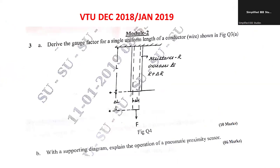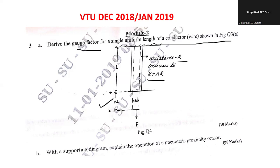The first question is: derive the expression for gauge factor of a uniform length of a conductor shown in figure 3A. We can see the resistance R, and after deformation the resistance changes by delta R along with a change in length. By applying the principle of strain gauge you can derive the expression for gauge factor. This is a general question expected for the forthcoming examination.